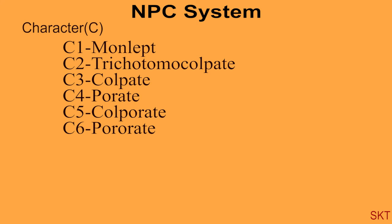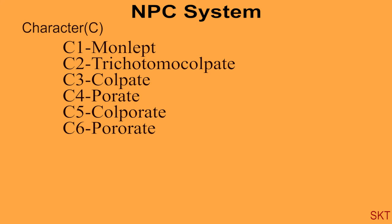So this summarizes about the three system of classification or three types of classification in NPC system that is number, position and character.